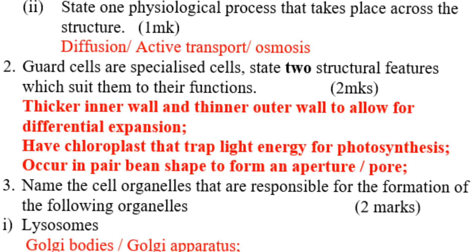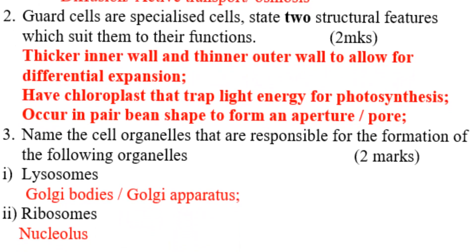Question: Guard cells are specialized cells. State two structural features which suit them to their functions. Guard cells are found in the stomata. Number one: they have a thin inner wall and thick outer wall to allow for differential expansion. Number two: they have chloroplasts that trap light energy for photosynthesis. They also occur in pairs to form an aperture or pore.